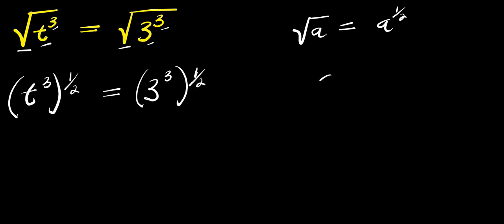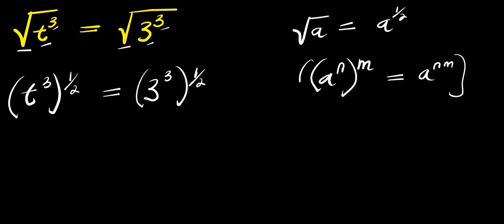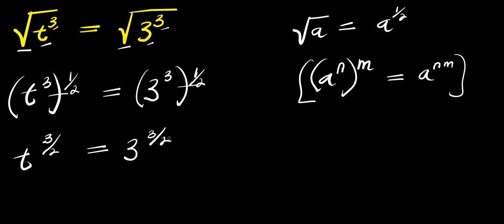Now if you have a to the power n, raised to the power m, this equals a to the power n times m. We multiply this out: we have t to the power three times one half, that is three over two, equals three to the power three times one half, that is three over two.